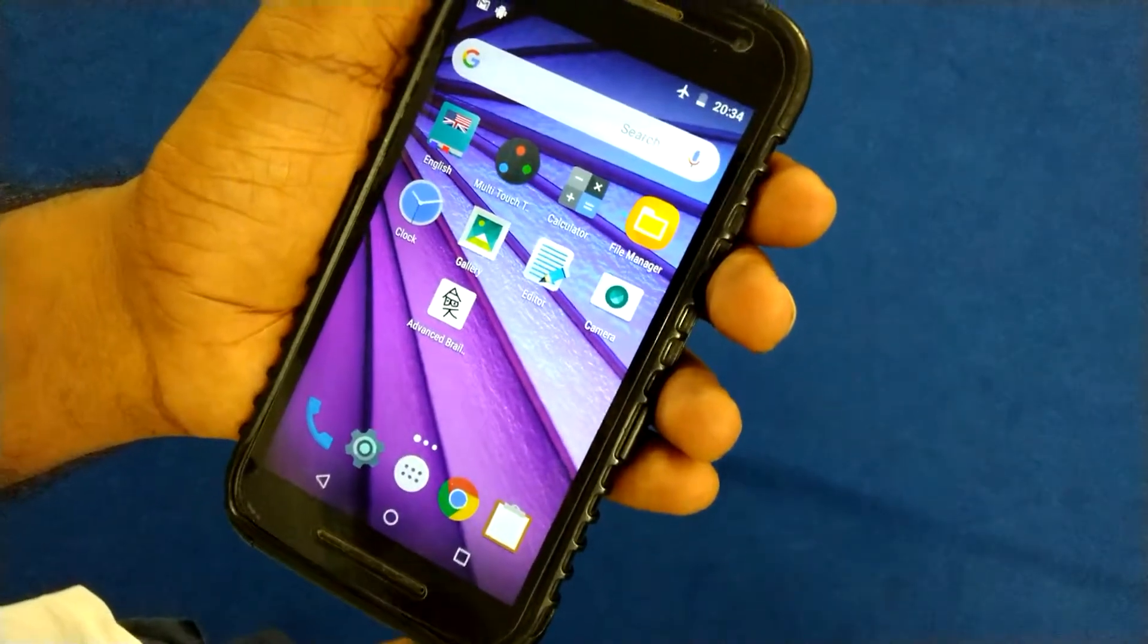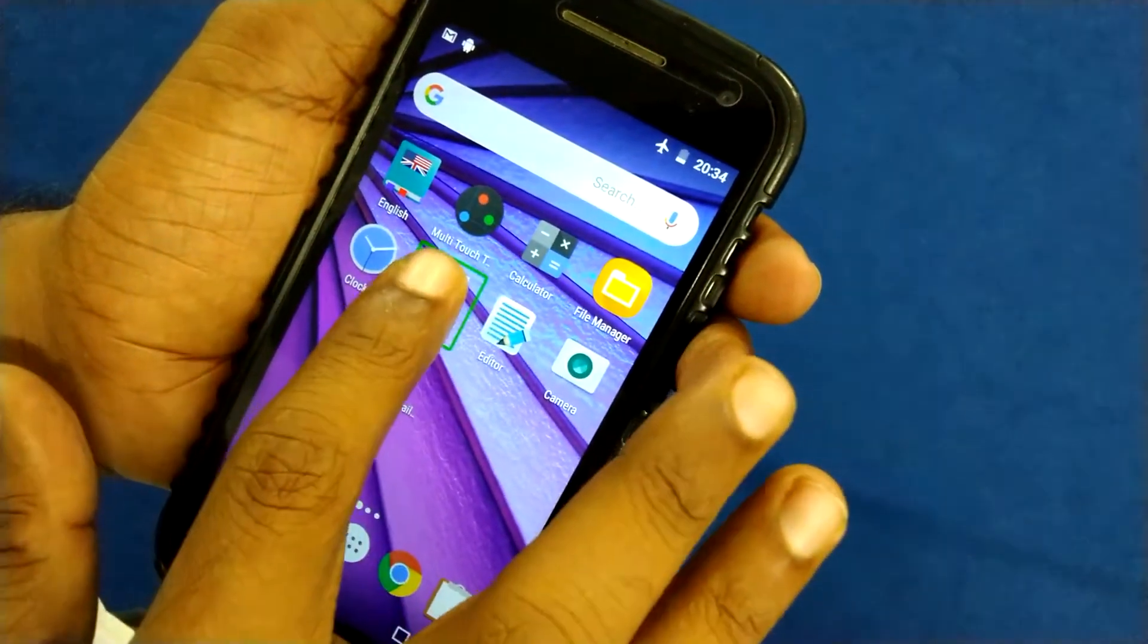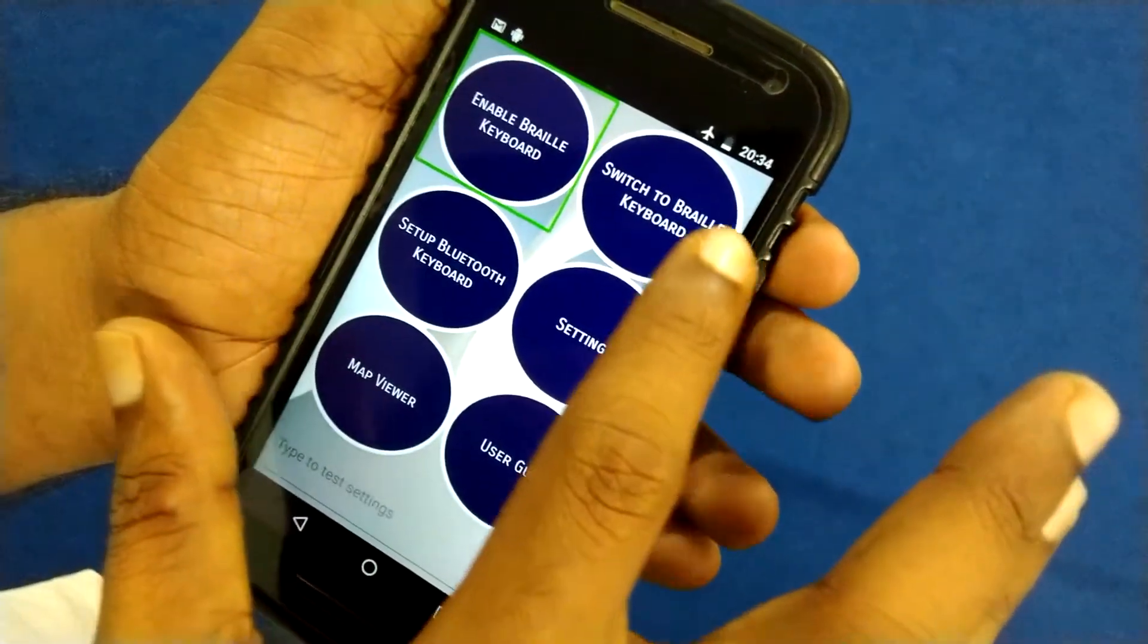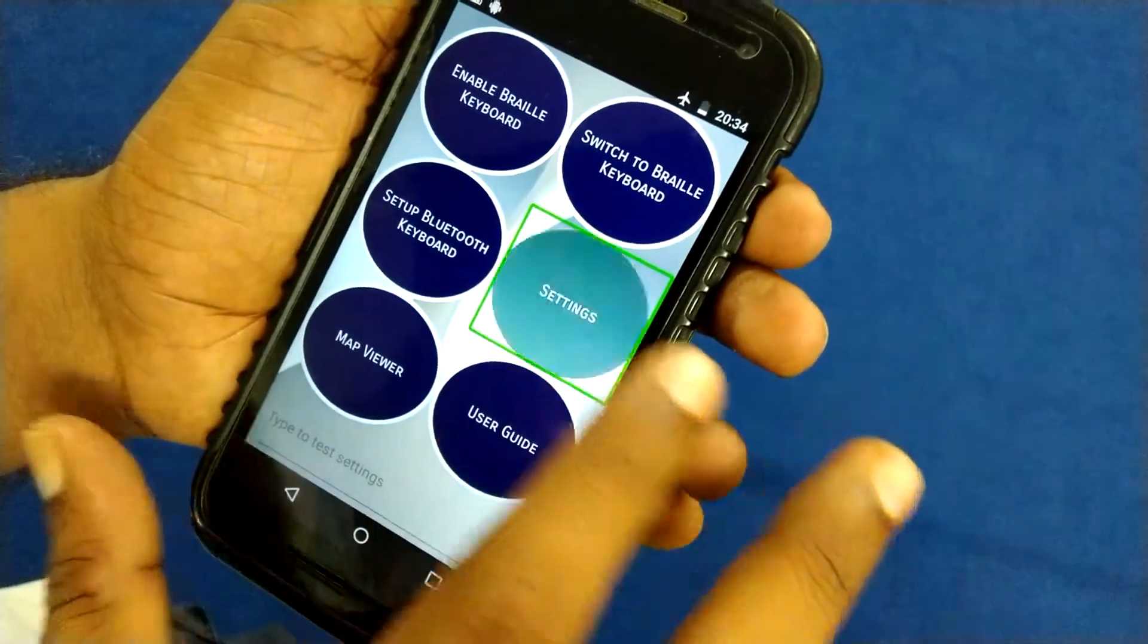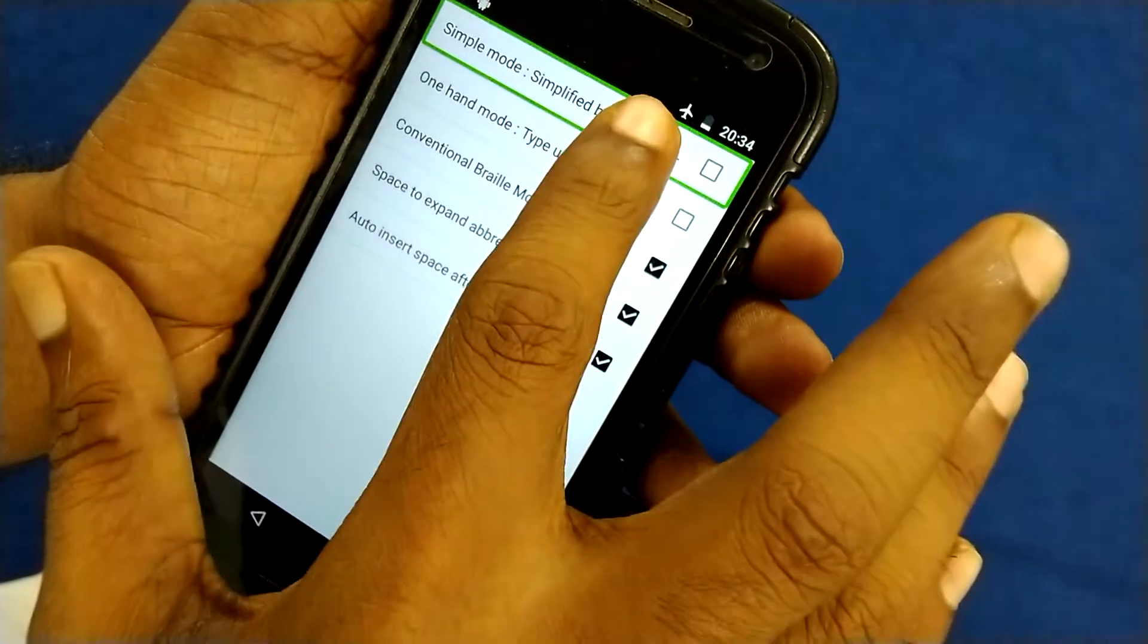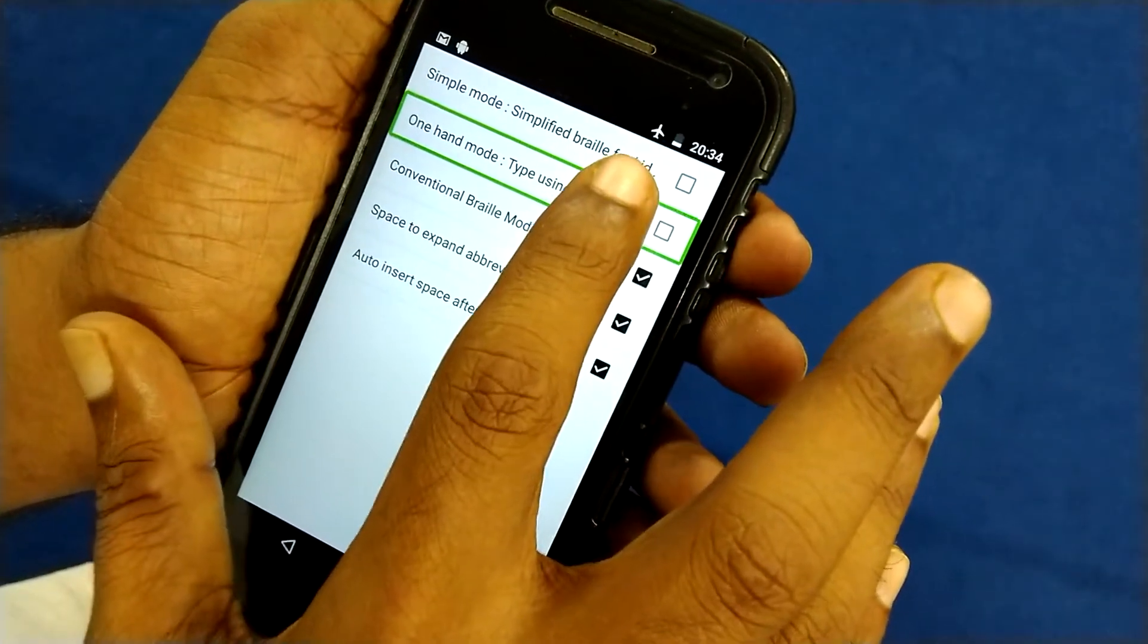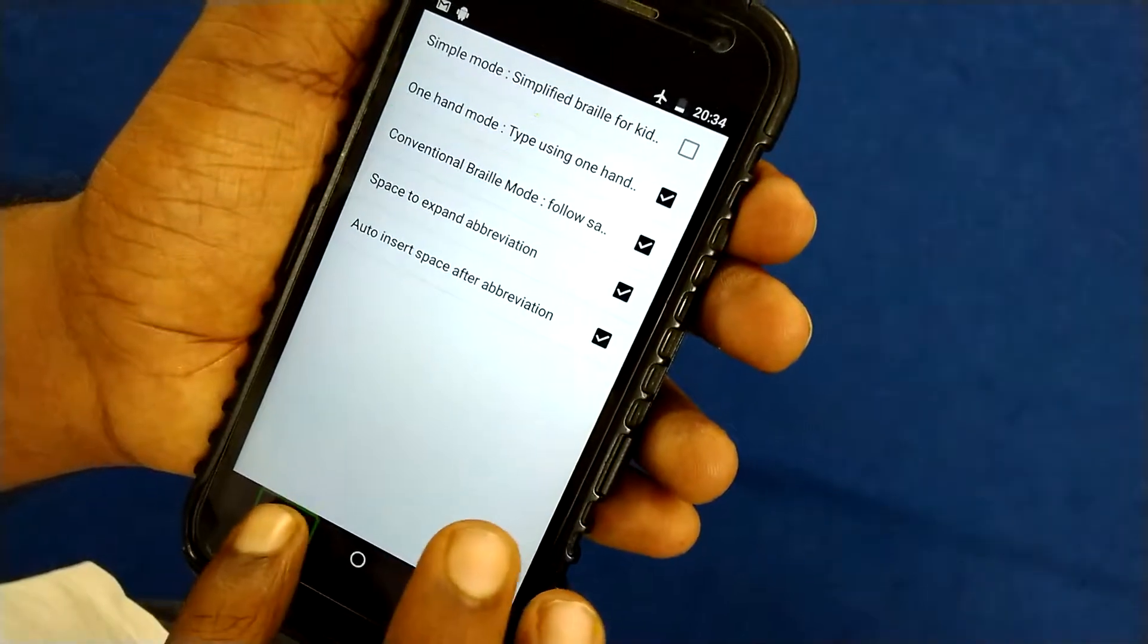I'm going to Advanced Braille Keyboard. First, Gallery Editor, Advanced Braille Keyboard. Enable Braille Keyboard button. Switch to Braille settings. Settings, languages, braille one hand mode. Type using one hand by separating braille combination to first and second half. First one, ticked. Okay.